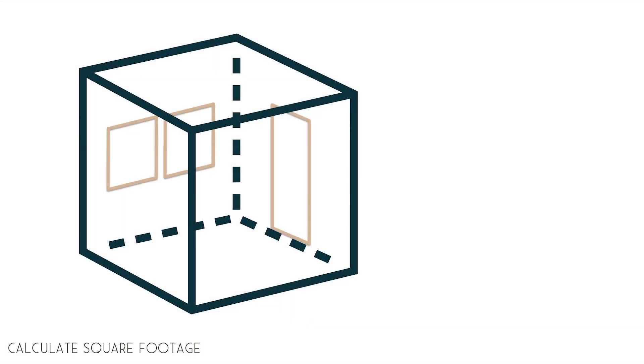To calculate the square footage of your room, multiply the length times the width. Since we do need to do a bit of math, let's keep it simple and imagine that we have a 12 foot by 12 foot room with one door and two windows. We'd multiply the length of 12 feet times the width of 12 feet to equal the square footage of 144.